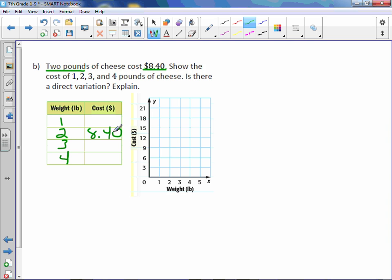Well, it says that 2 pounds cost $8.40. Which means 1 pound would cost half of that, which is $4.20. 3 pounds would be $12.60. Take $4.20 times 3. And 4 pounds would be $16.80. Taking $4.20 times 4.